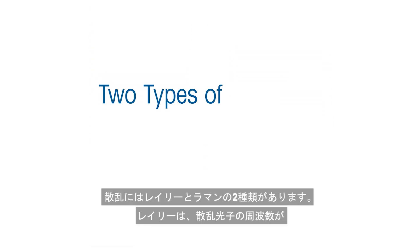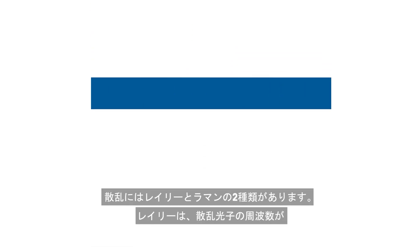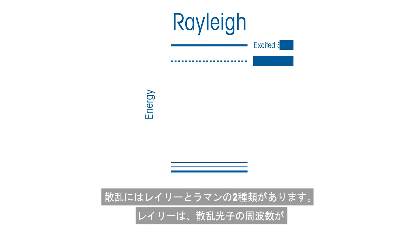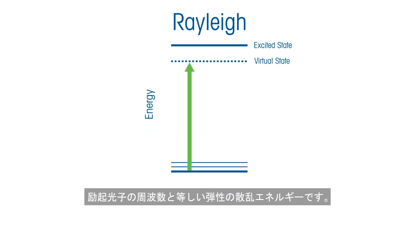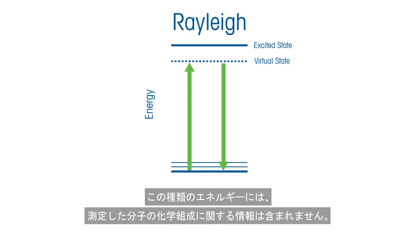There are two types of scattering: Rayleigh and Raman. Rayleigh is elastic scattered energy, which means the frequency of the scattered photon is the same as the excitation photon frequency. This type of energy is non-informational to the chemical makeup of the molecule being interrogated.